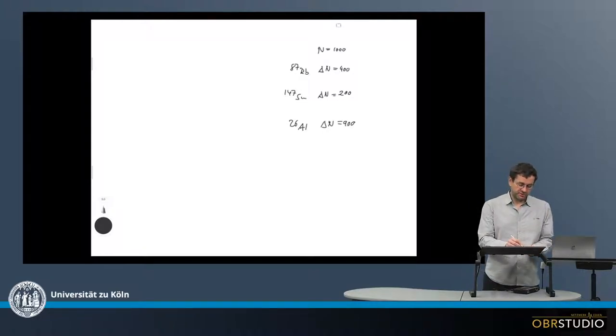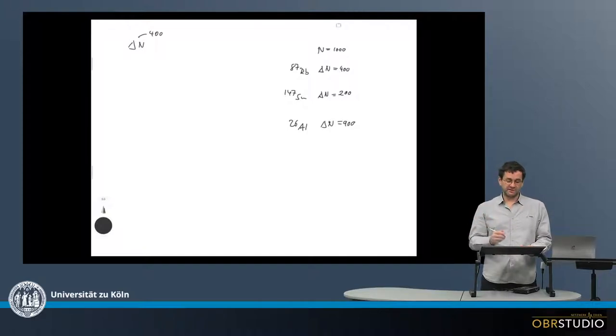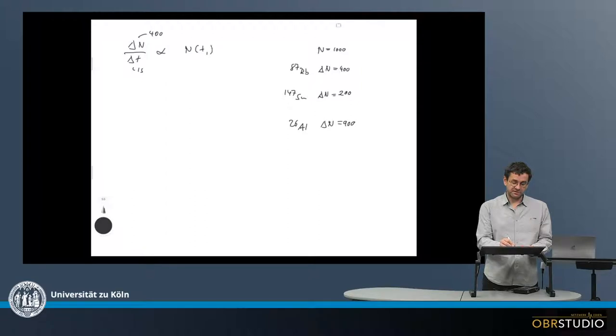And this relationship can be written as, so this delta n is the amount of material that decays, for example 400 rubidium-87 isotopes, in a certain amount of time, say maybe 1 second. And this of course depends on how much of this material is present at a certain time t1, for example, if this is t1.